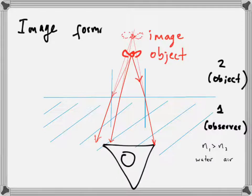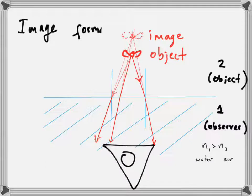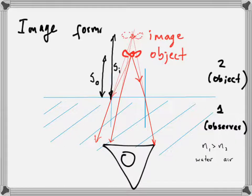What the observer sees is the image of the fly — the fly appears to be located at the position of the image. The real fly emits these rays, but when those rays pass through the surface into the water they get bent such that they seem to be coming from a different point. So the observer sees the image of the fly at a location different from where the actual fly is.